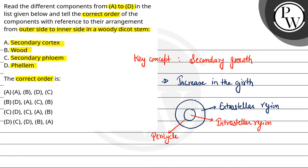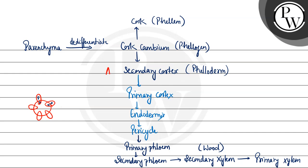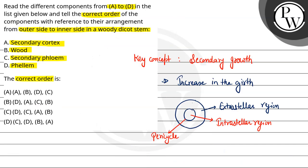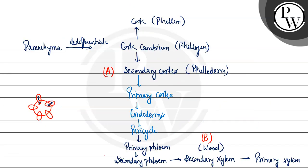Ab question mein diye gaye components ko hum arrange karte hain. First hai secondary cortex aur second hai wood. Secondary cortex ho jayega A and B is the wood. Usse next diye hain secondary phloem and phellum. Secondary phloem ho jayega C aur phellum ho jayega D. So inka sequence from outer side to inner side ho jayega D, then A, then C and then B.